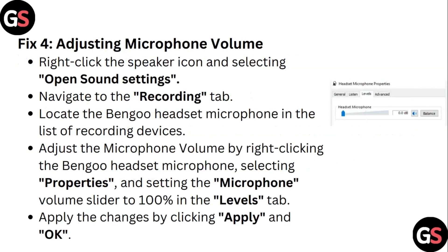Step 4: Adjusting Microphone Volume. Right-click the speaker icon and select Open Mic Sound Settings. Navigate to the Recording tab, then locate the Bengo headset microphone in the list of recording devices. Adjust the microphone volume by right-clicking the Bengo headset microphone, selecting Properties, and setting the microphone volume slider to 100% in the Levels tab. Apply the changes by clicking Apply and OK.